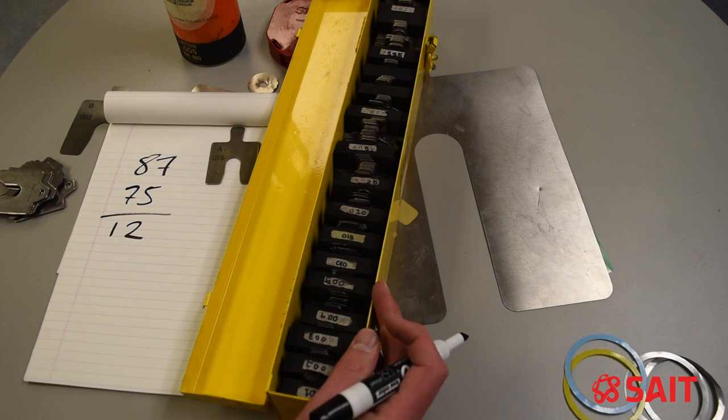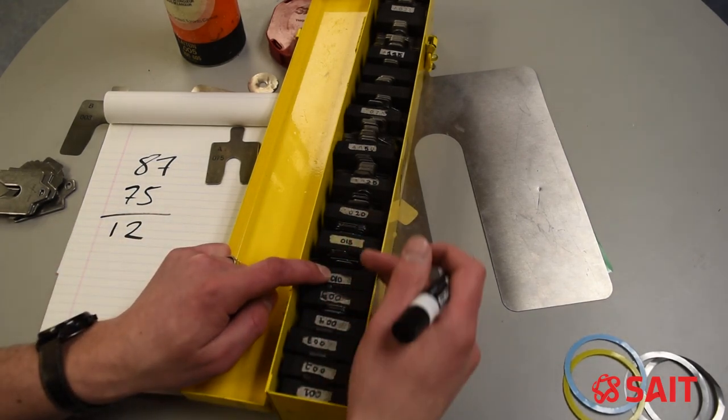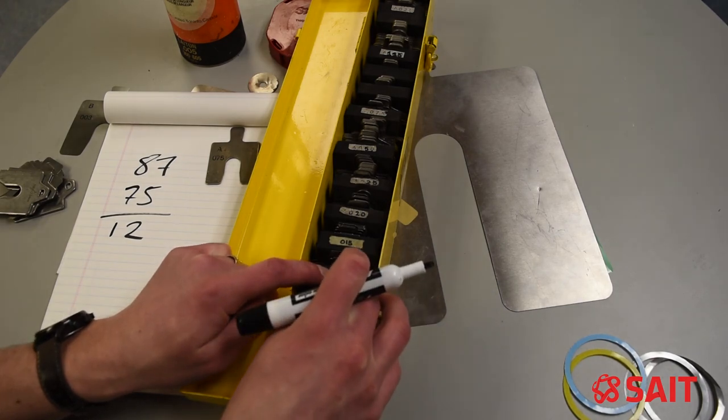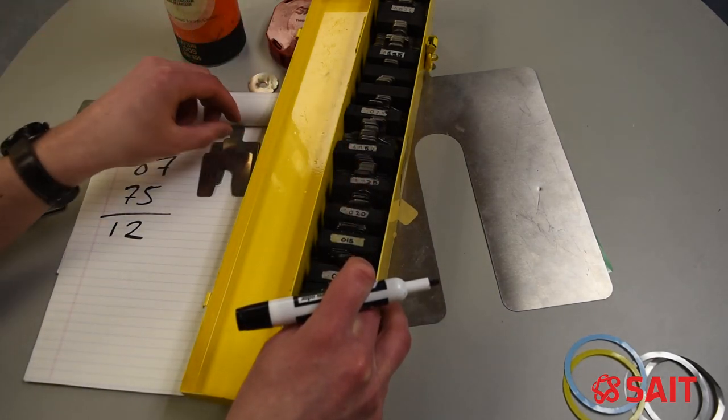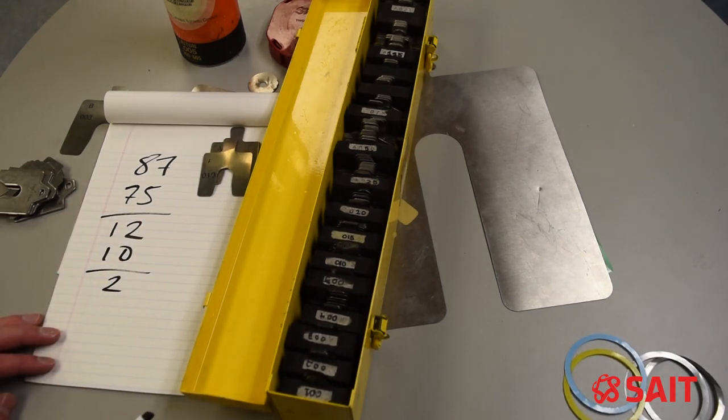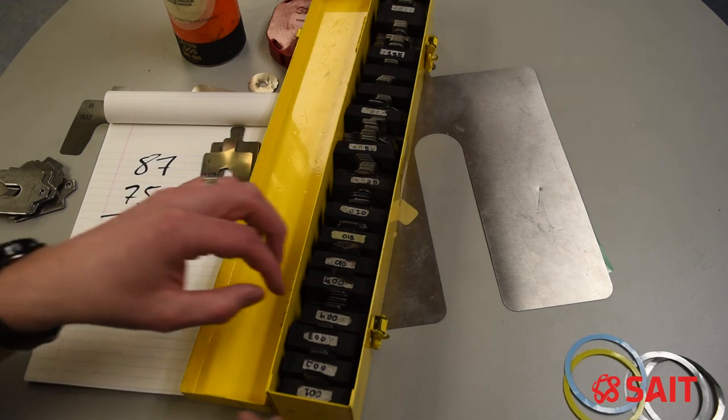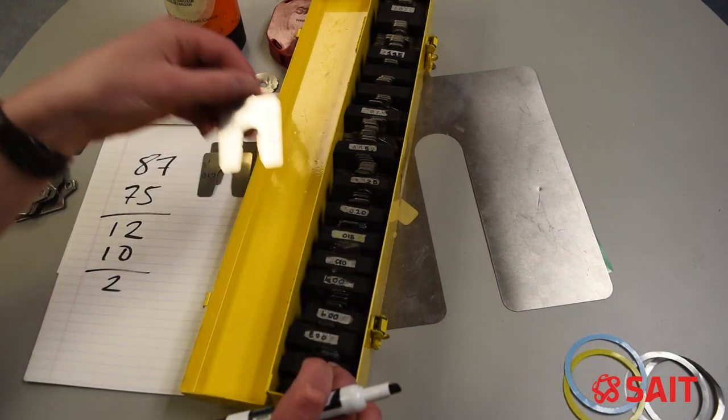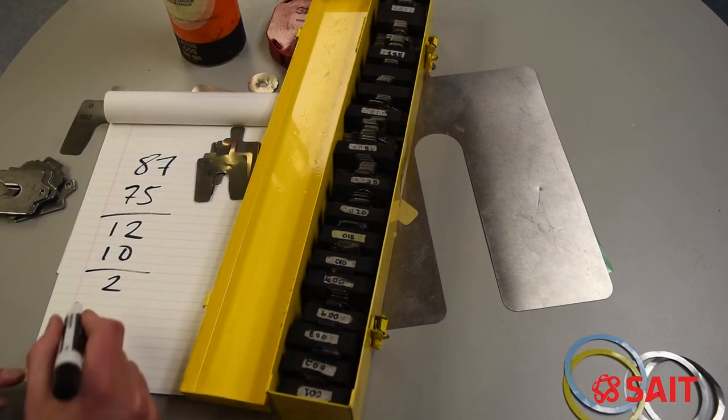Let's go through the same thing again. We have 10, we have 15, but we don't have a 12 thousandths shim. I would take the 10 thousandths shim, giving me a remainder of 2. Find through here a 2 thousandths shim, giving me a total of 87 thousandths of an inch.